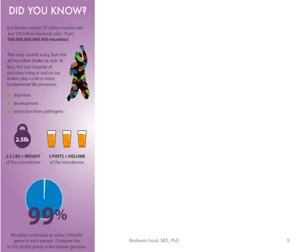If you count the cells, our bodies have 37 trillion cells, and 100 trillion are basically microbes. If you take these microbes and weigh them, they come out to about 2.5 pounds of bacteria — it's a lot of weight. And in terms of volume, 99%. Understanding this concept will guide you to quite a few answers for patients, for over-the-counter drugs, and so forth.